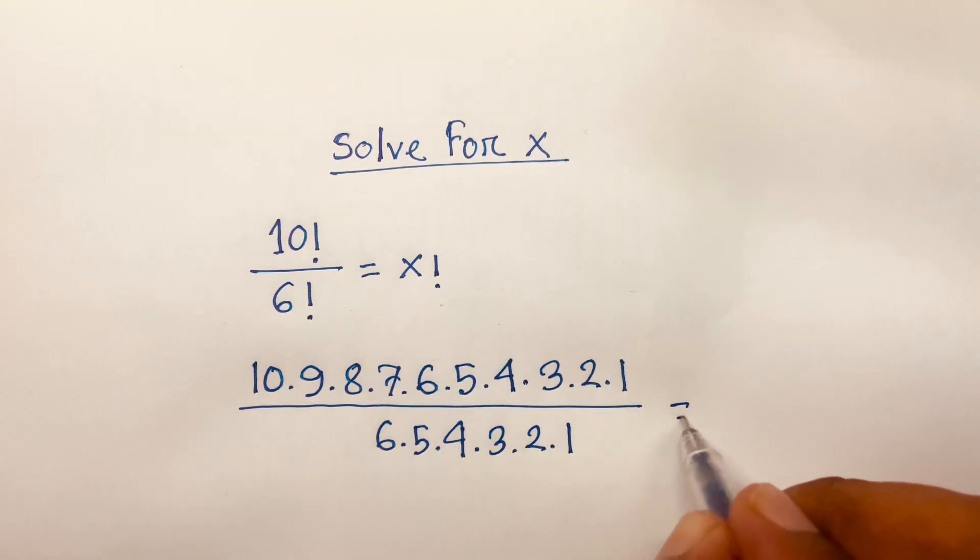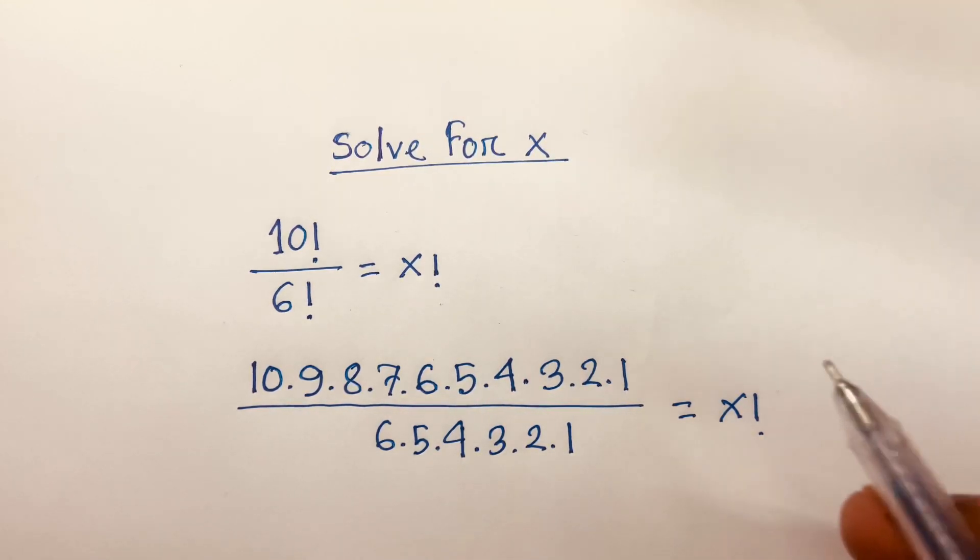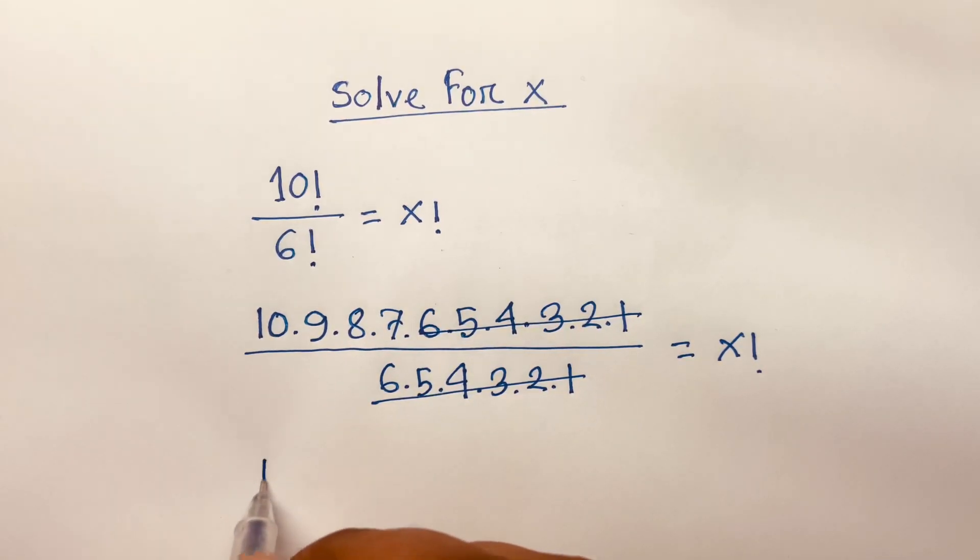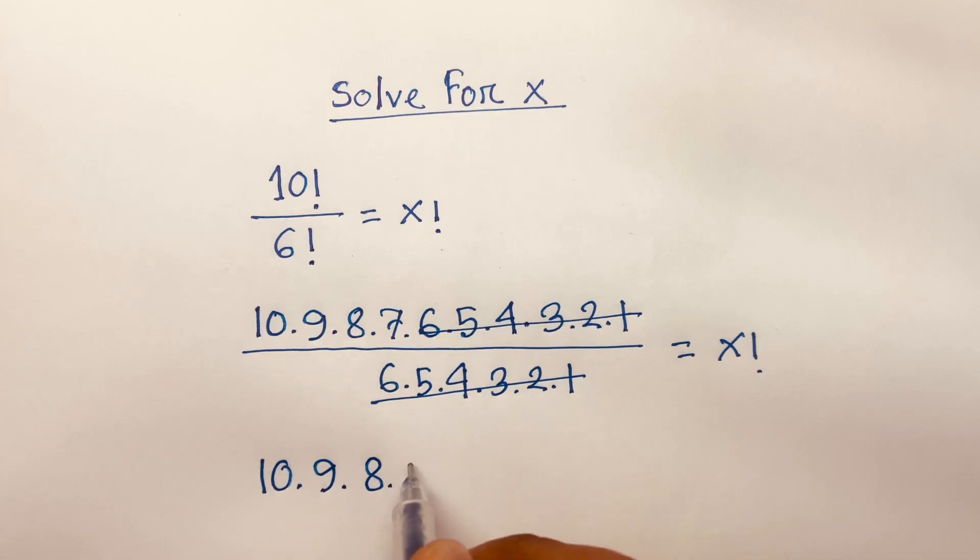Then here is x factorial. I can see easily these are cancelled. So it will be 10 times 9 times 8 times 7 is equal to x factorial.